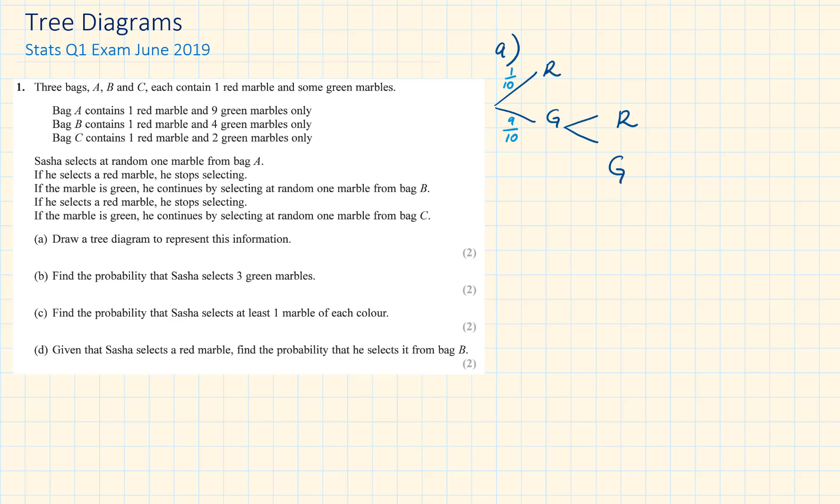The branches are red and green again, with probabilities 1 fifth and 4 fifths. Again if it's red it stops so we are not going to continue the branches of red. If it's green he will continue to pick from the third bag. The probabilities of these are 1 third for red and 2 thirds for green.